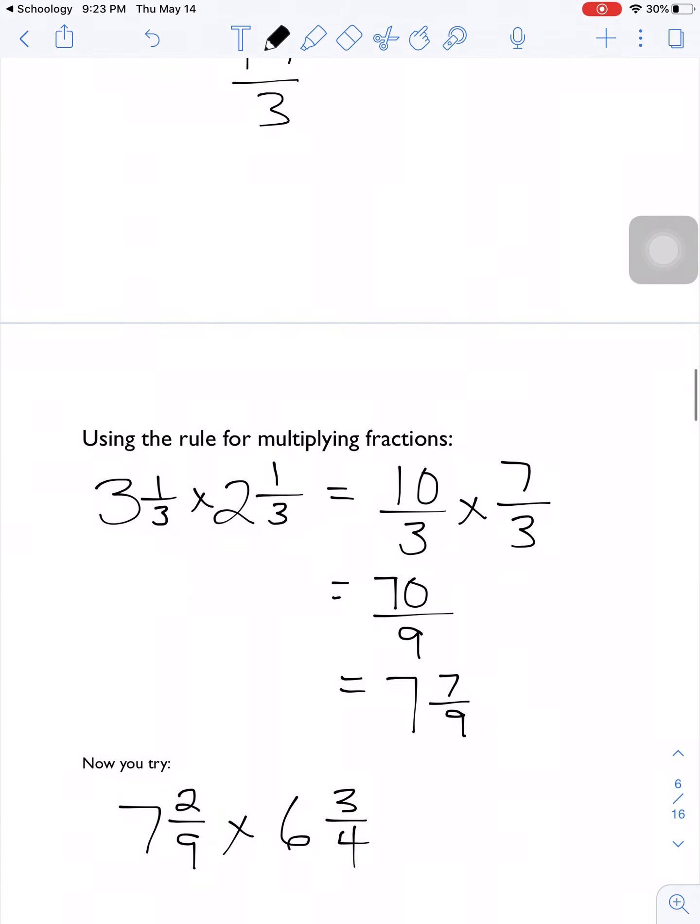We have to be able to change that mixed number back into an improper fraction. So let's look at an example. We have 3 and 1/3 times 2 and 1/3. So 3 times 3 plus 1 is going to be 9 plus 1 is 10/3. 2 times 3 is 6 plus 1 is 7/3. And then we just use the rule for multiplying fractions. We multiply the numerators, multiply the denominators. So we've got 10 times 7 is 70, 3 times 3 is 9.